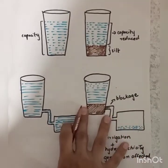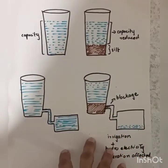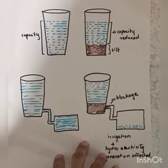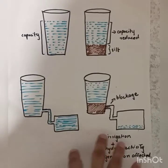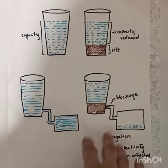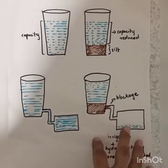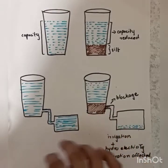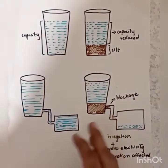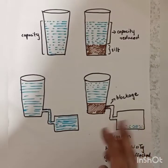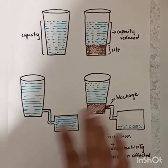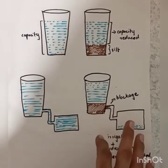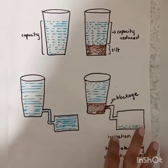With the help of these diagrams, you can easily understand the process of siltation and the problems it causes. Once the process of siltation is clear in your mind, you will be able to write the causes and effects on your own. It's pretty understandable.